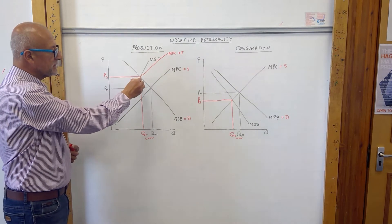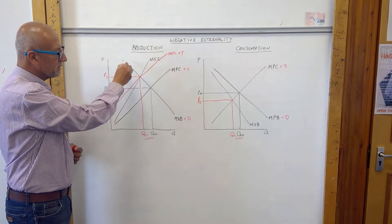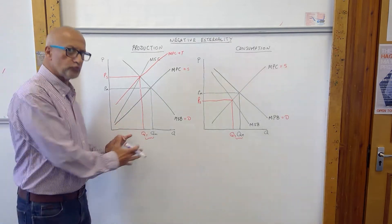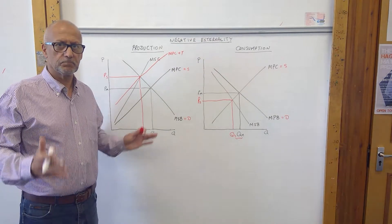So this now is our marginal private cost plus tax and we now have a new equilibrium. We have that, the supply curve, we are now producing QS and we have got rid of the overproduction. Bingo.